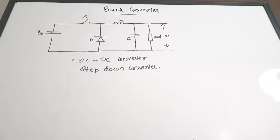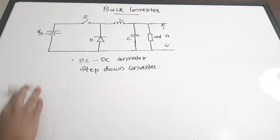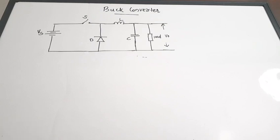The functionality of a buck converter is that whatever supply voltage you give, it produces an average output voltage lesser than the supply — that is why it is called a step-down converter. It is a DC-to-DC converter and is actually very efficient, with efficiency greater than 90%. It is used in a lot of applications. This is a quick revision video on buck converters covering the circuit working and the waveforms.